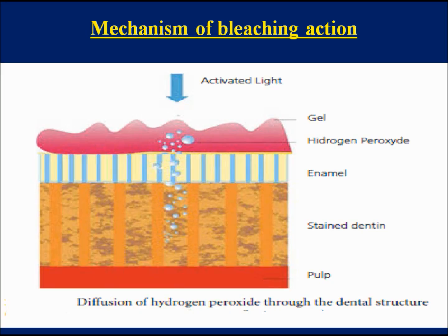Mechanism of bleaching action. Bleaching agents act on the organic structure of dental hard tissue, slowly degrading them to by-products such as carbon dioxide. Inorganic molecules do not react with bleaching agents. This reaction is called oxidation-reduction reaction, or redox reaction, whereby unstable peroxides convert to unstable free radicals, which oxidize or reduce other molecules.